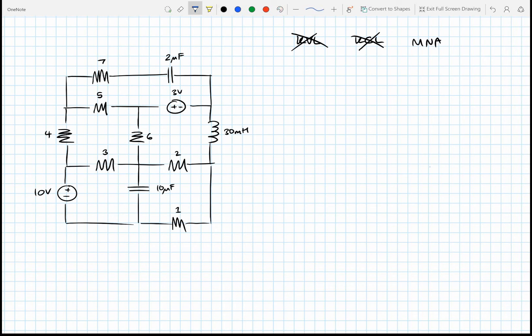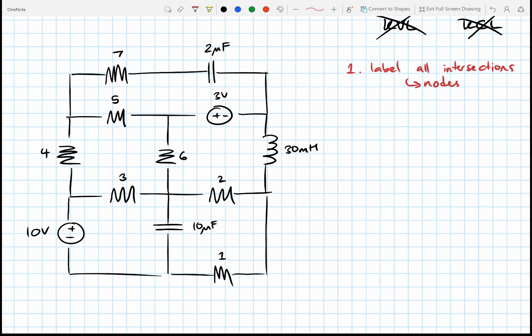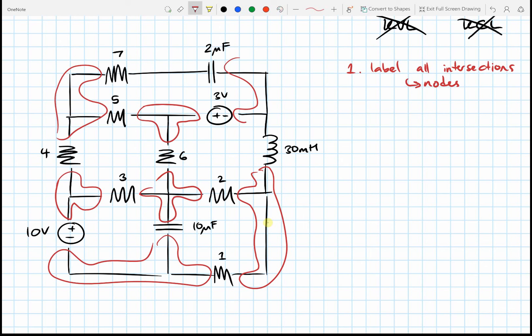Here are the steps to solve a circuit with Modified Nodal Analysis. Step number one: Label all intersections. These are called nodes, and a node is pretty much an intersection where the voltage is the same anywhere. So this here, that's a node. This here, that's a node. Node. Node. See what I mean? This here, not a node. There's no intersection.